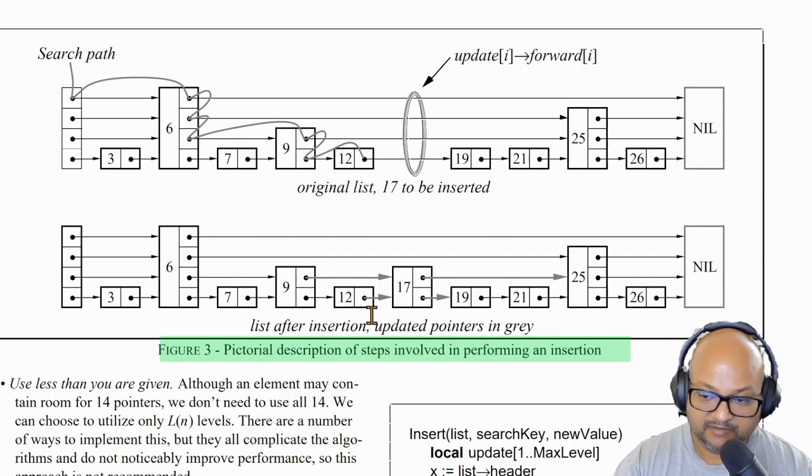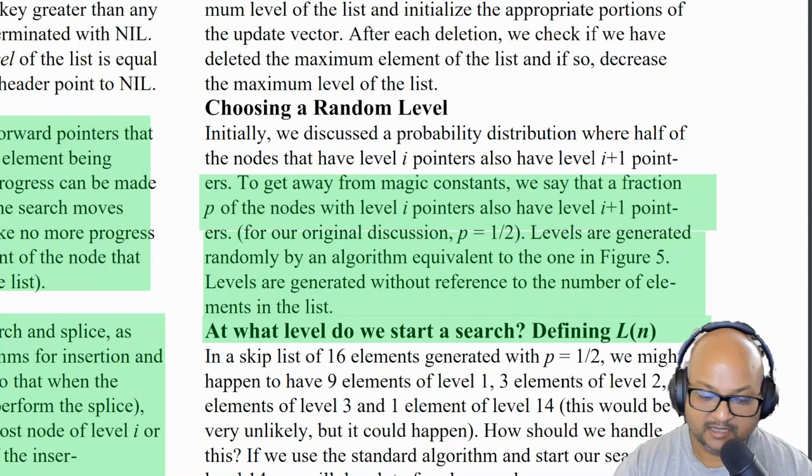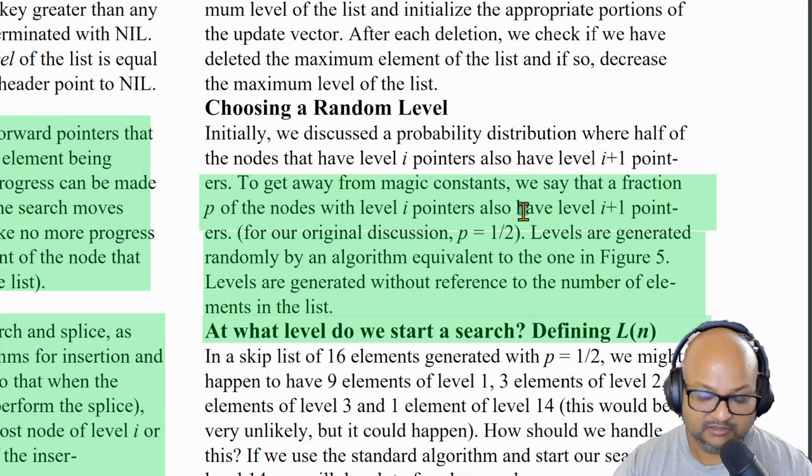In this diagram the updated pointers are indicated in gray. So as you can see that's localized to just around the node we inserted and doesn't have to touch the entire data structure globally. And when we're inserting a new element the level of that element is chosen at random. But we choose it in a way such that the distribution follows that log pattern that we were talking about earlier.